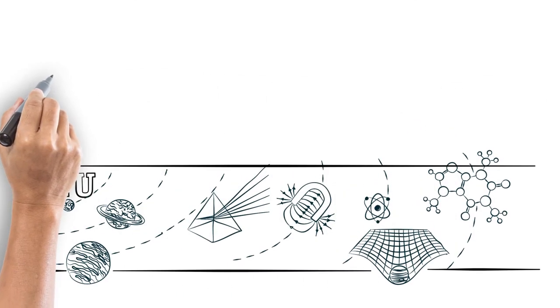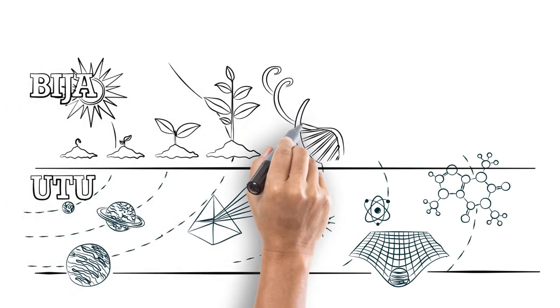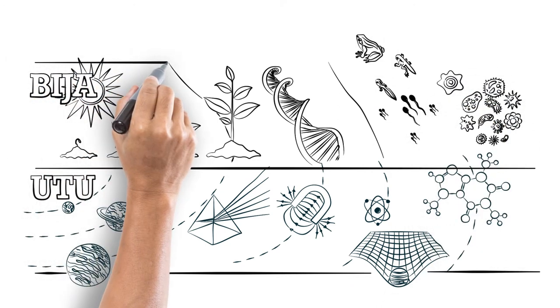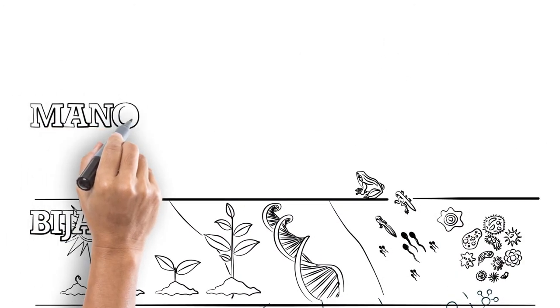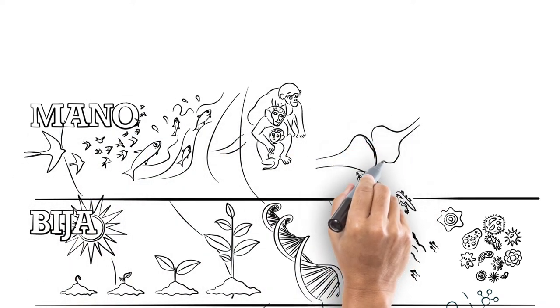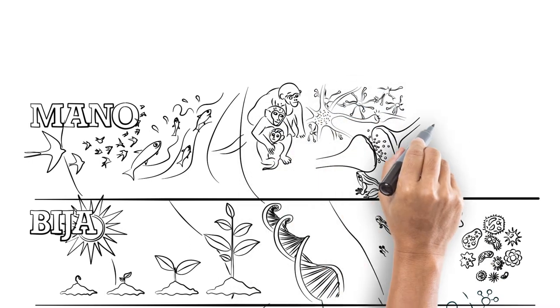Then the Bija Niyama, organic biological laws and processes, such as the growth of a seed into a plant, photosynthesis, genetics. The Mano Niyama: laws and processes such as perception and instinctual activity, such as the salmon finding their way home or migrating birds.